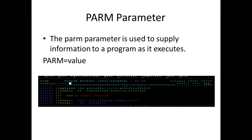The next parameter is the PARM parameter, which is a keyword parameter. It is used to supply information to a program in execution. Whenever we are executing a program, if we want to pass some value to it, we use the PARM parameter — PARM equal to value. In this example: step one EXEC PGM=PALMSUB, PARM equal to 20,10. I am going to pass 20 and 10 to the program. This value will be received in the linkage section of the program.